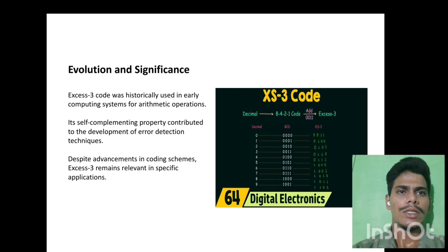Evolution and Significance. XS3 code was historically used in early computing systems for arithmetic operations. Its self-complementing property contributed to the development of error detection techniques. Despite advancements in coding schemes, XS3 remains relevant in specific applications.